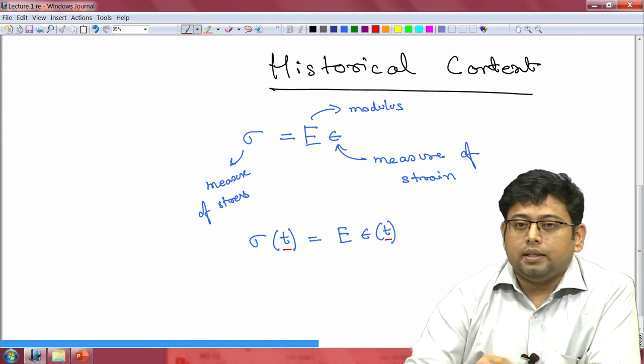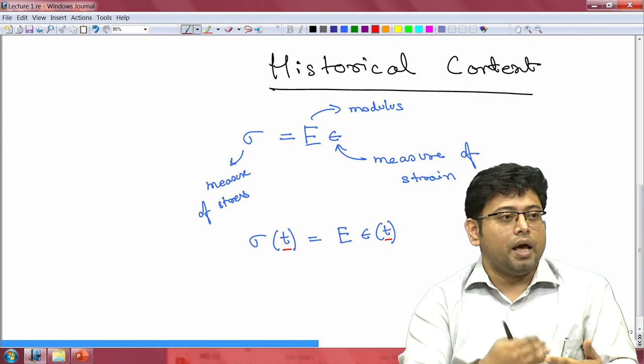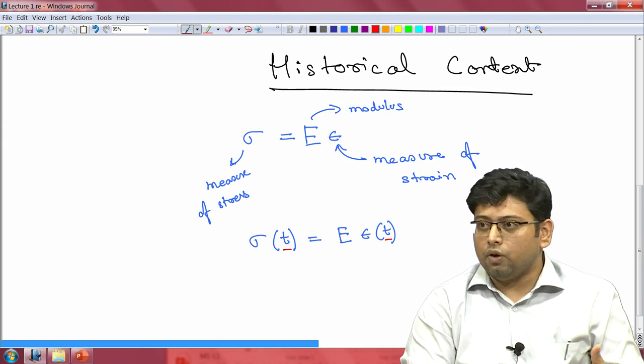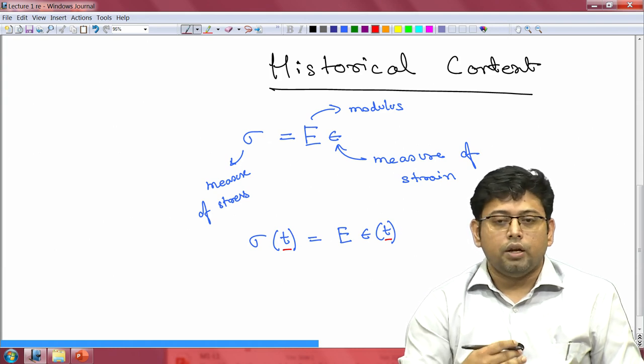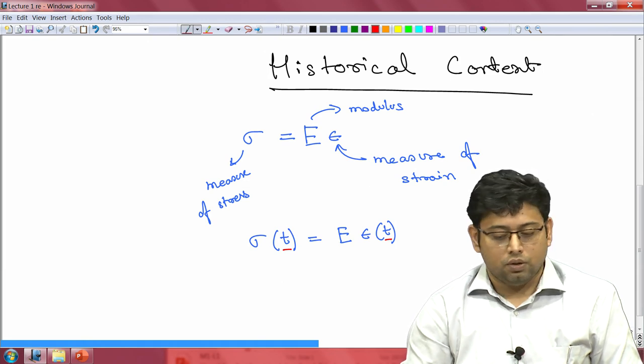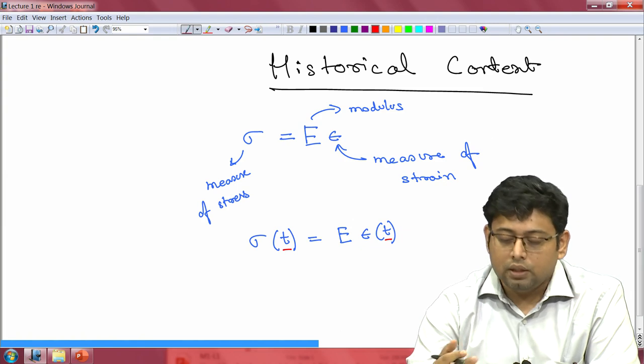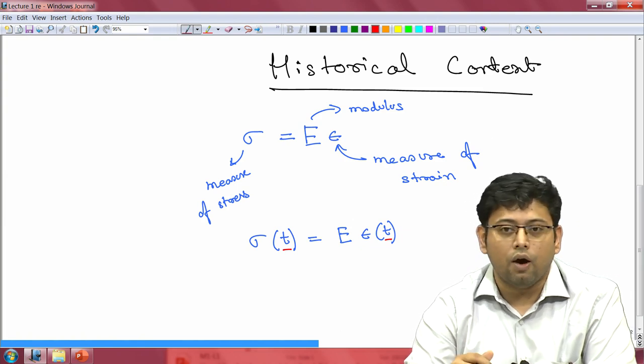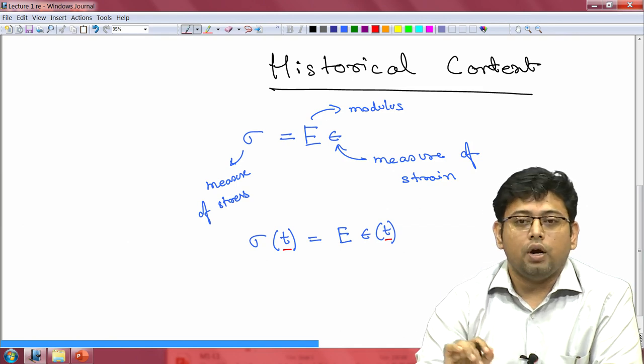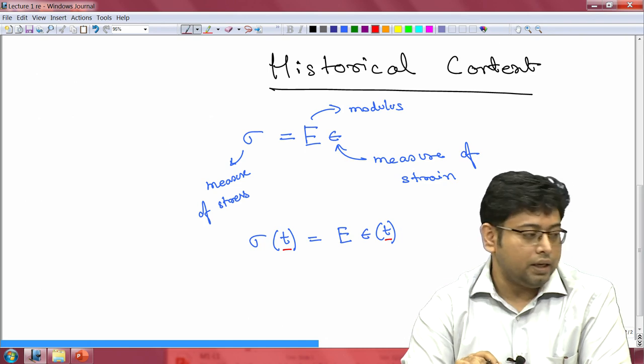What this equation is saying is that the instantaneous stress depends on the instantaneous value of strain and vice versa. It almost implies that the system response is infinite. If you put some amount of strain, this amount of stress is going to be instantaneously generated. But we know that systems take time to react. Whenever you apply a force or you are trying to study a system, systems have their own responses. There are usually natural time scales that are associated with a system's response. It is important to understand what these time scales are and how they are relevant in this particular context, which is why I want to highlight a couple of things from the historical context here.